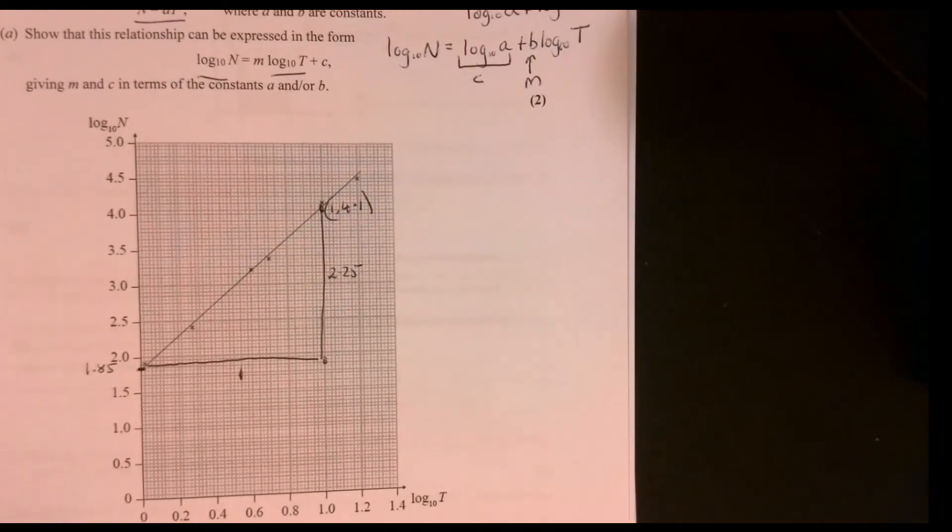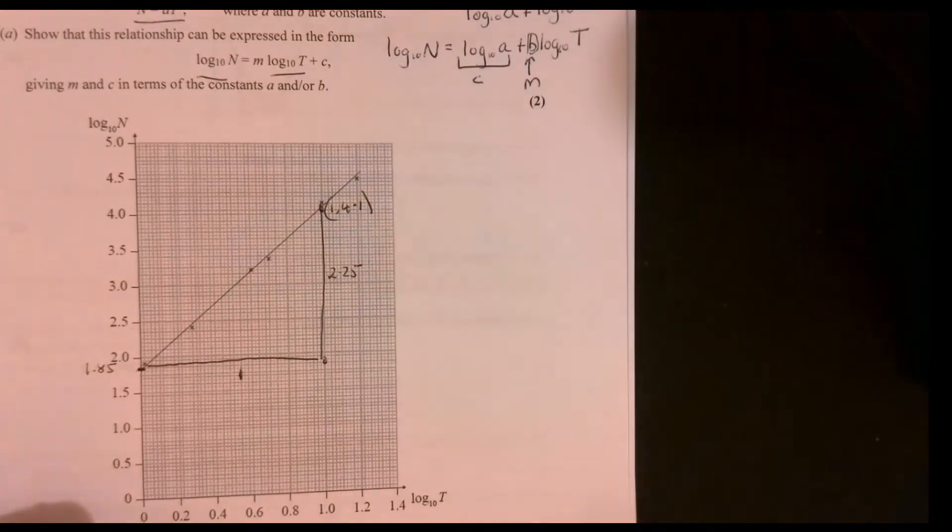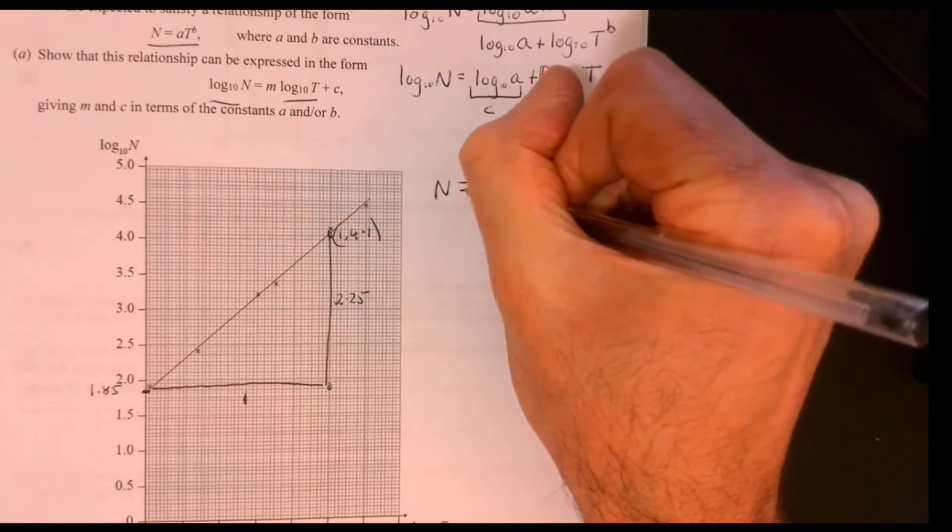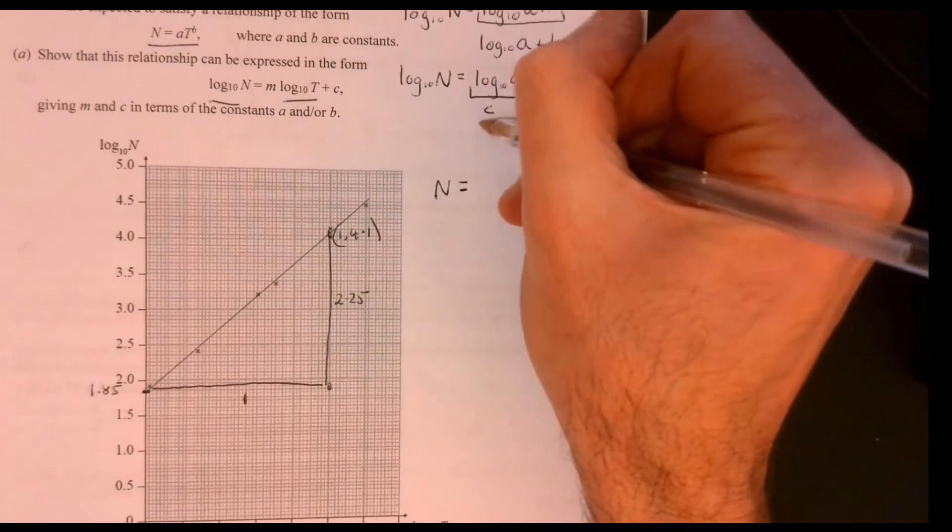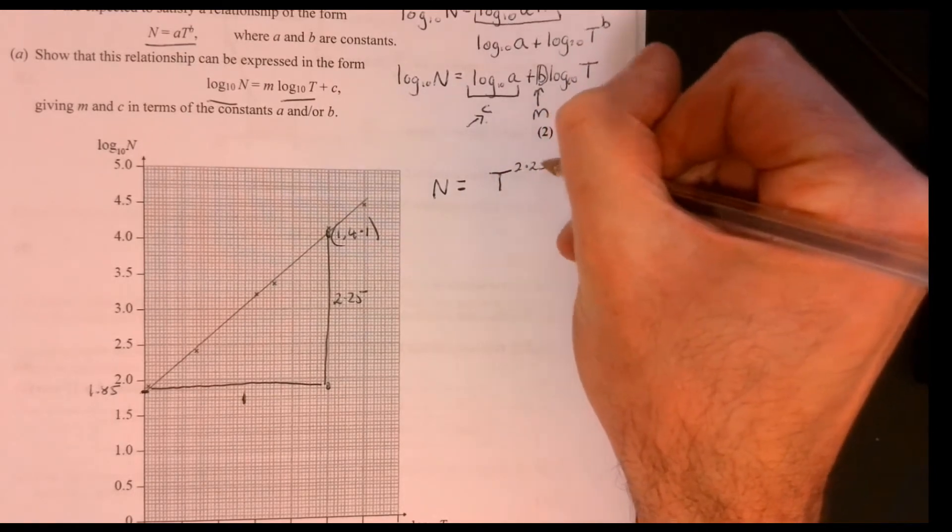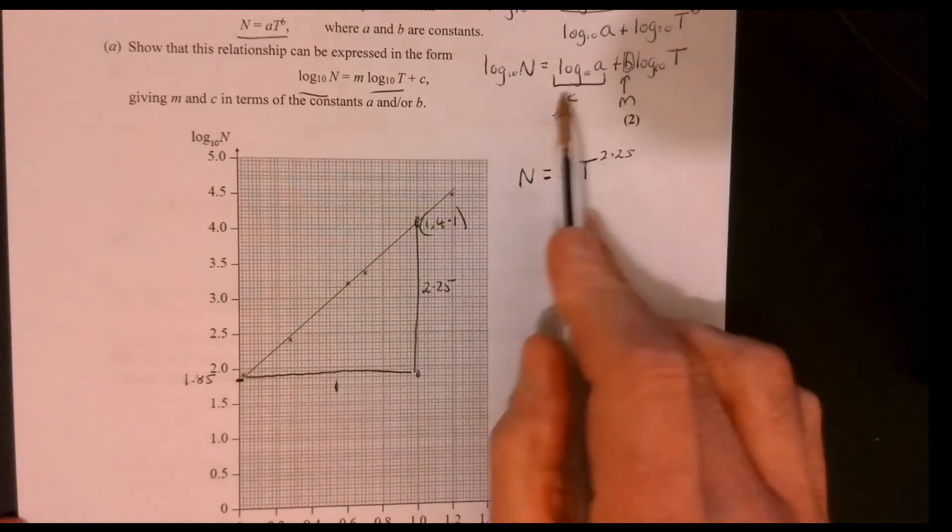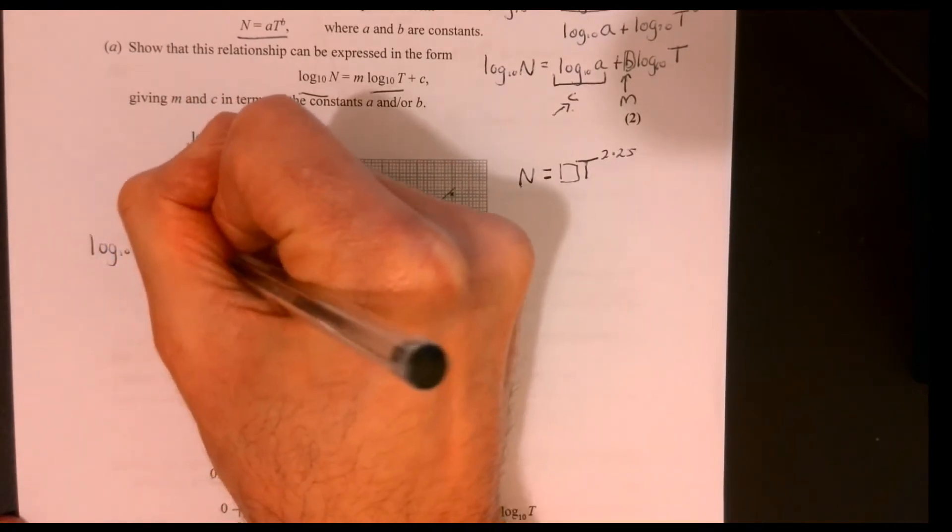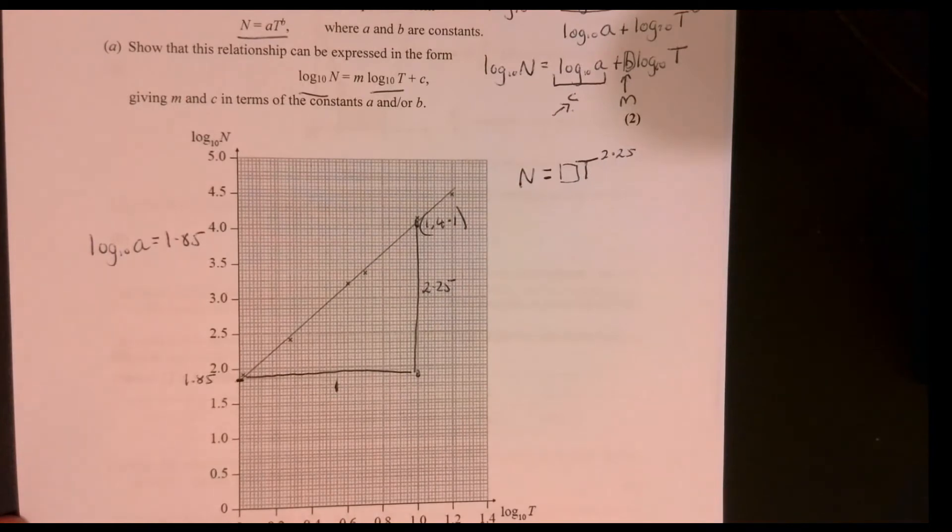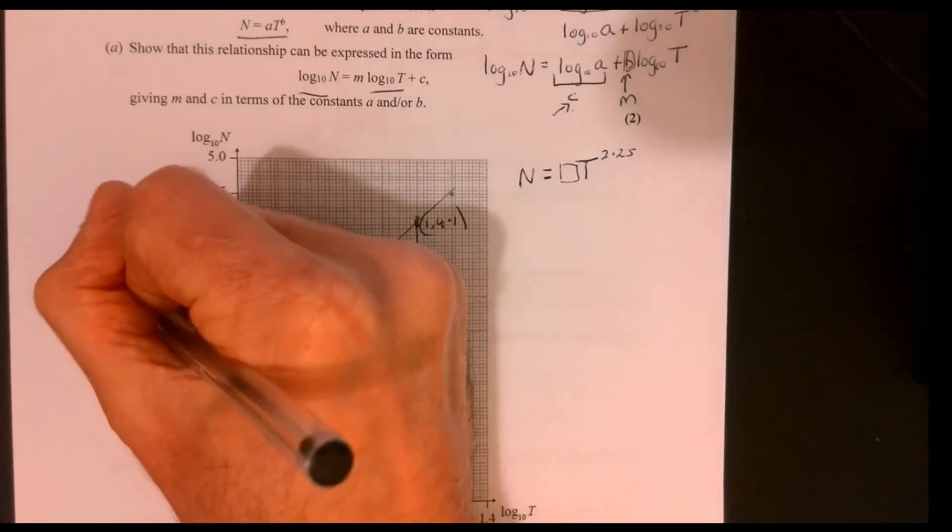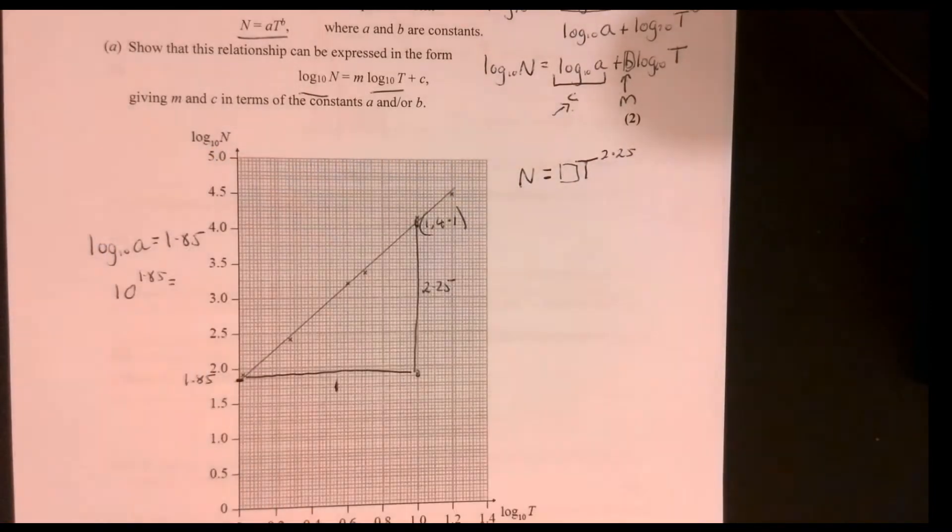Let's write down what we've got now. We know that the B bit here is 2.25. Let's rewrite this part. We've got N equals, we'll come back to this part in a second. And then we can have T to the 2.25. Now we need to work out what the A value is. It's the constant value. We can write down 1.85. Now we can easily work out what the A value is. If I rearrange this,